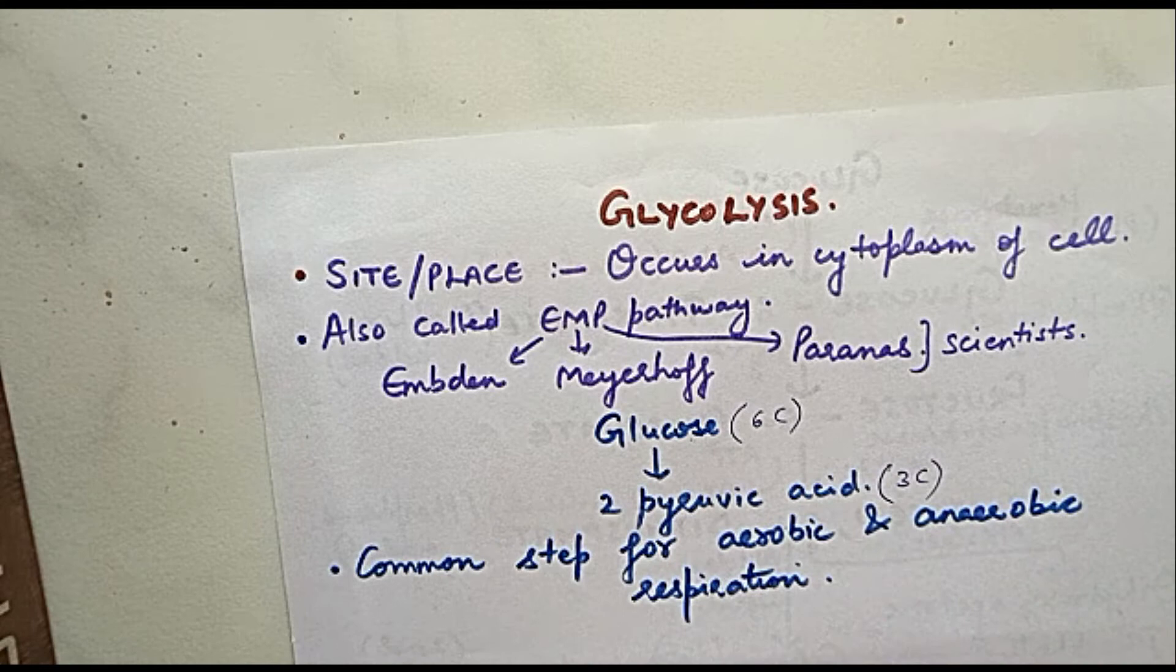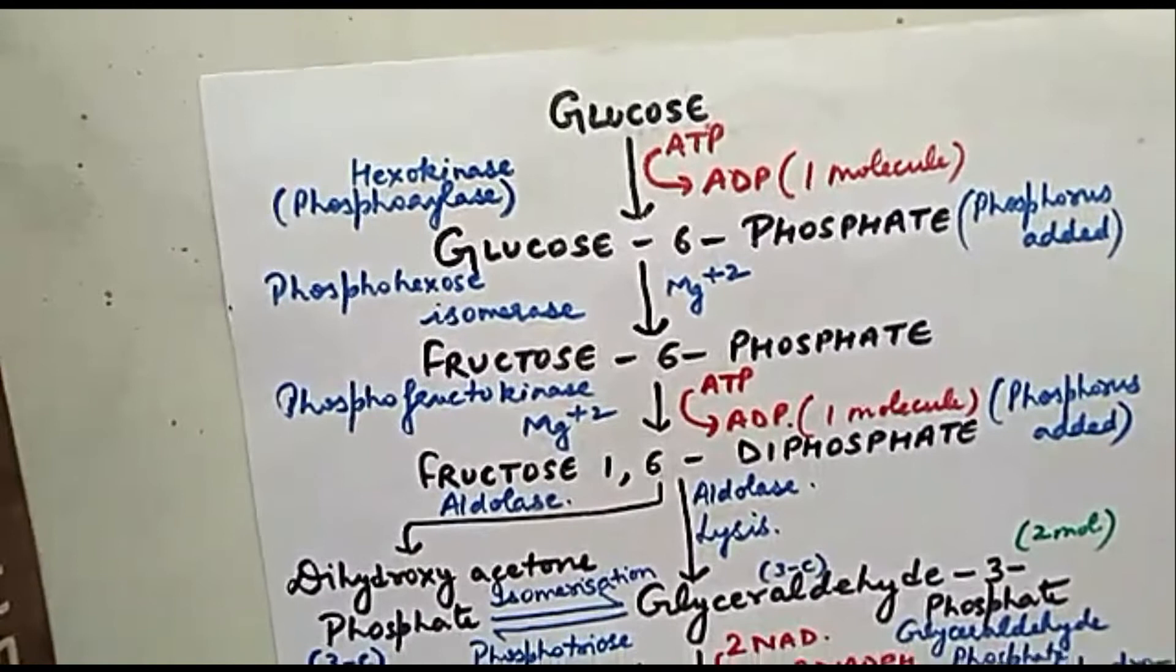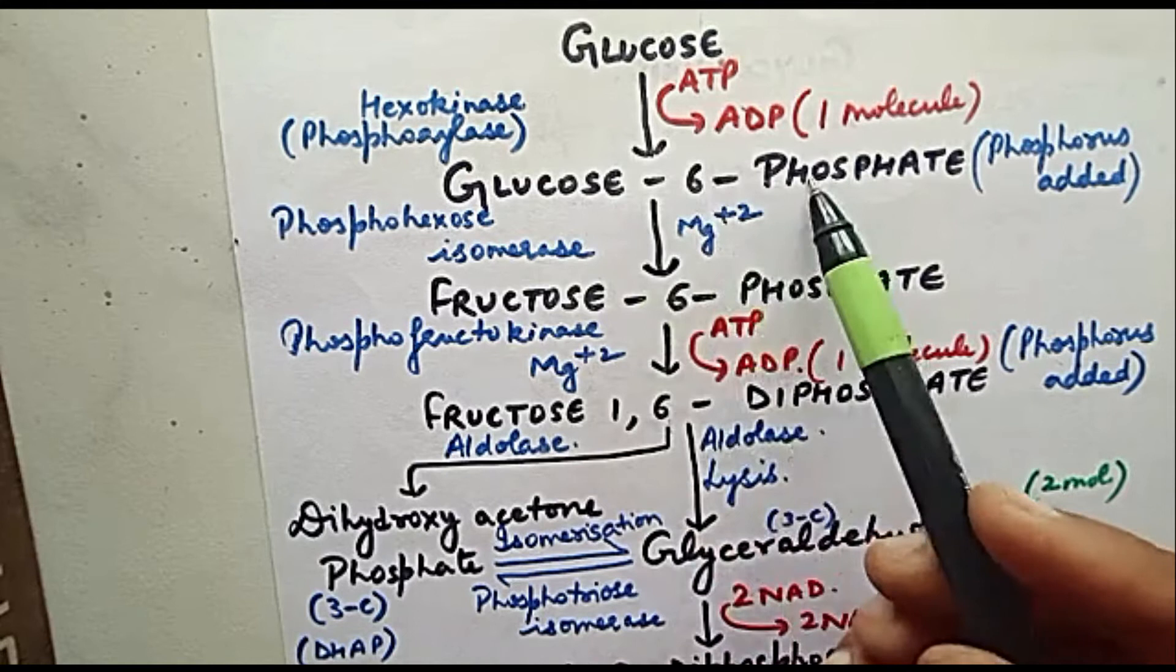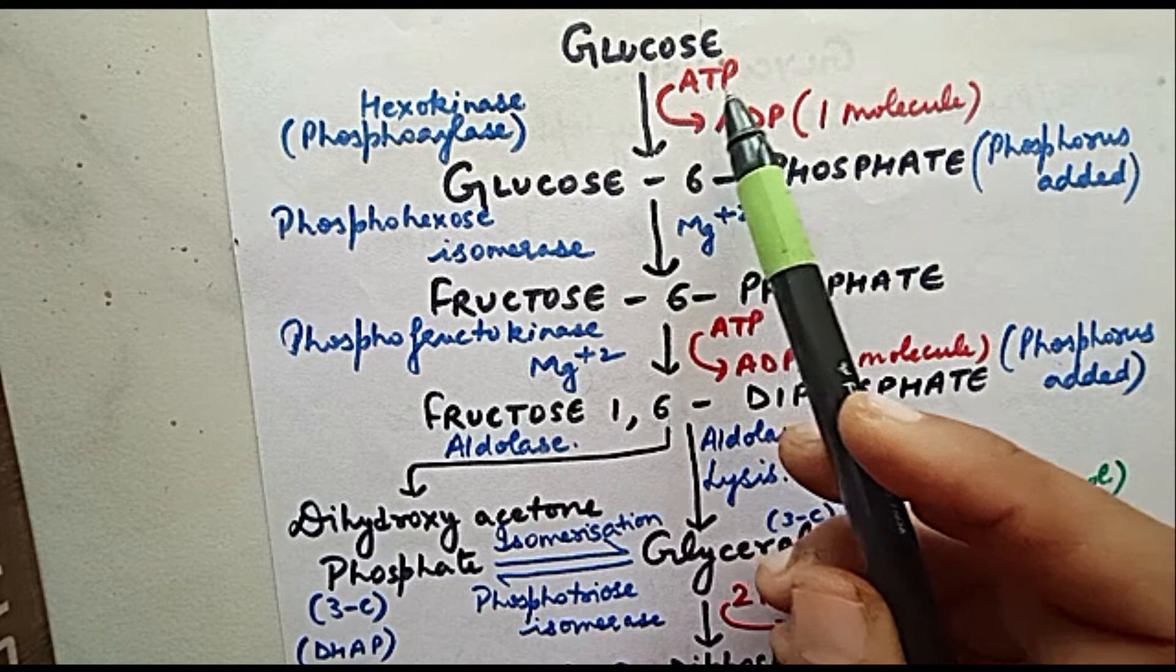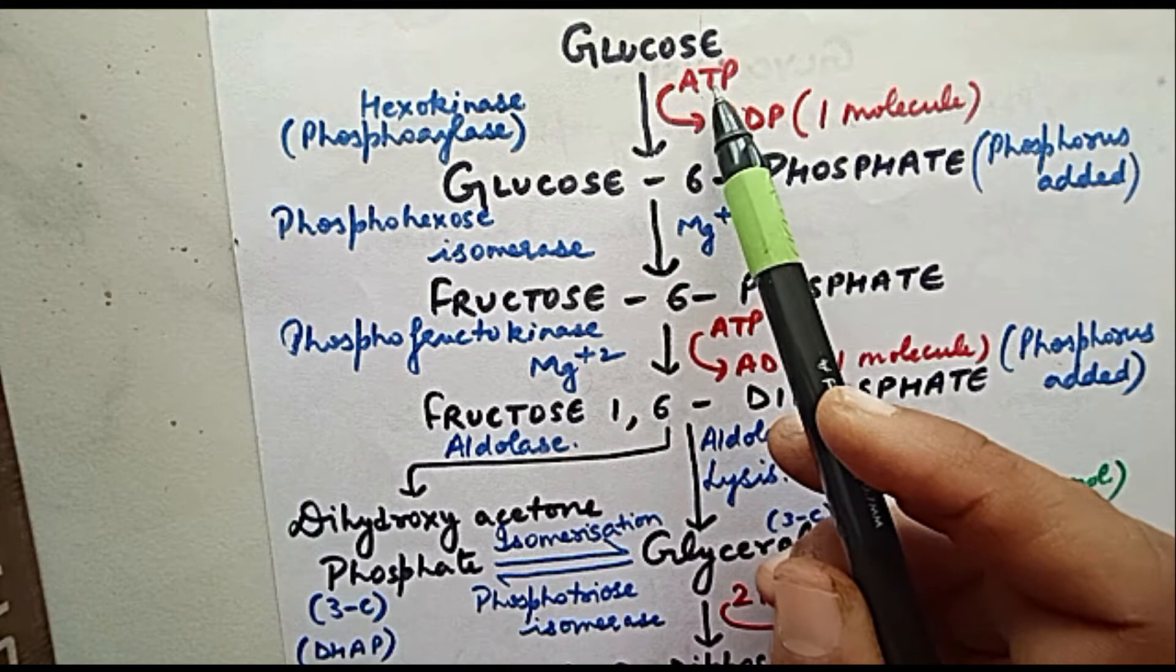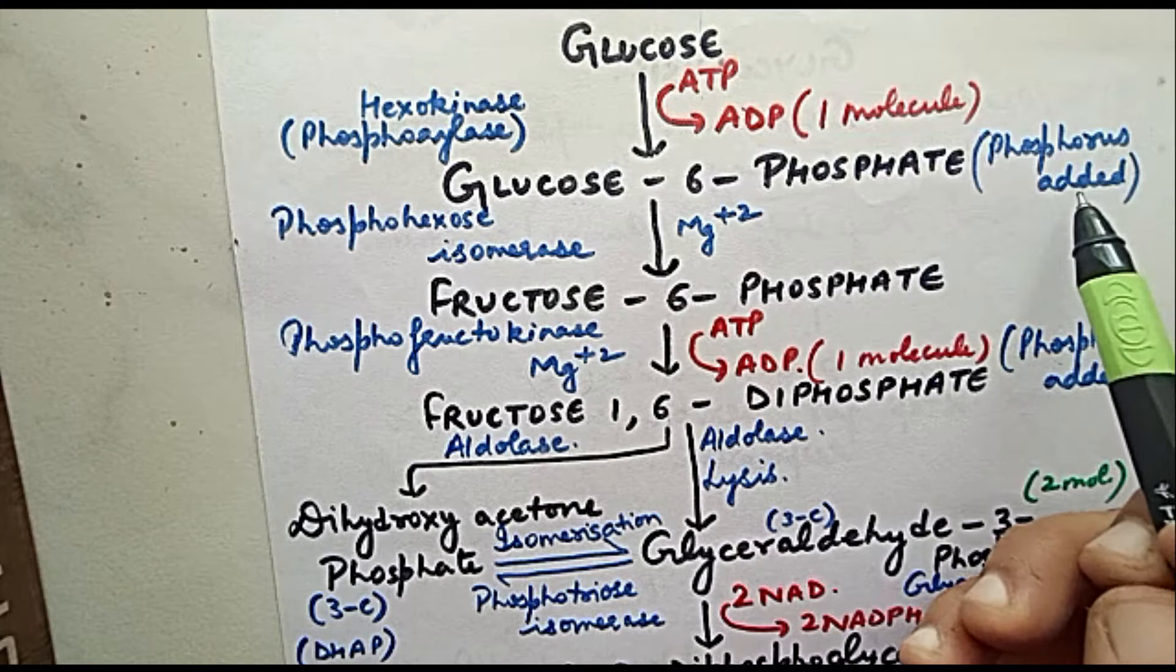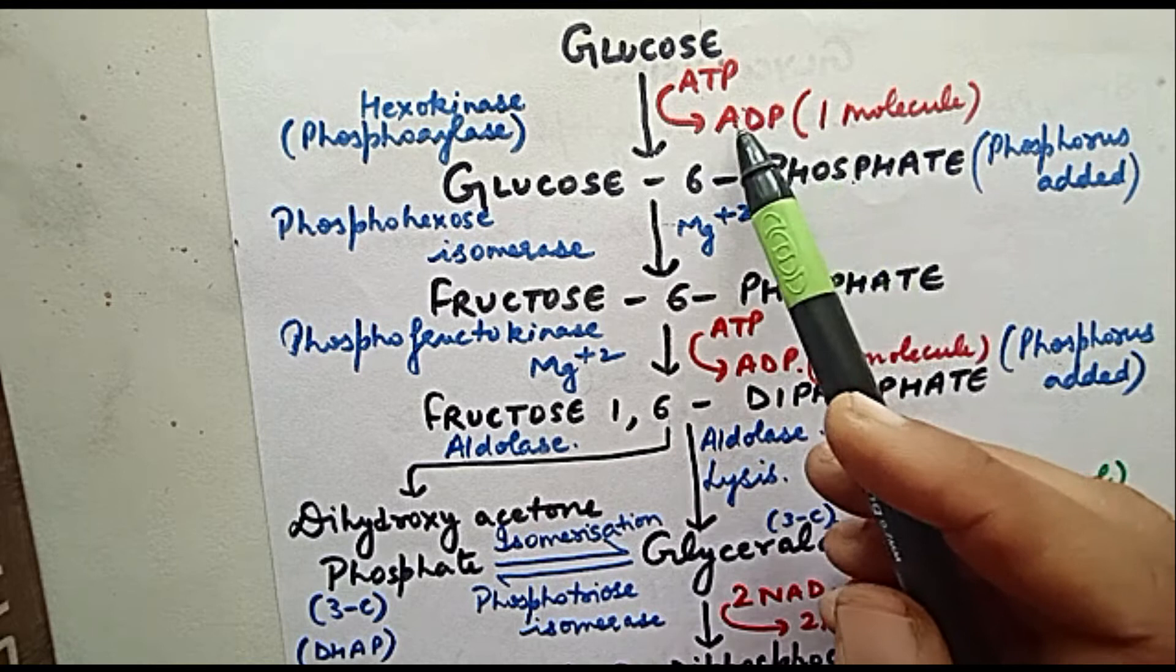First of all, one molecule of glucose is going to get converted into glucose-6-phosphate. In this step, one ATP molecule is used. ATP stands for adenosine triphosphate that is going to get converted into adenosine diphosphate, meaning one phosphorus group is added. Glucose converts to glucose-6-phosphate.